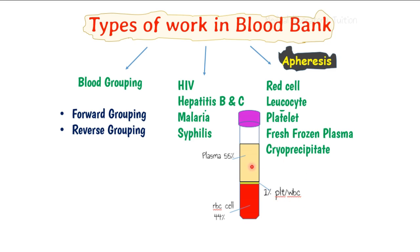We can also store blood at minus 70 degrees Celsius to produce fresh frozen plasma and cryoprecipitate, which are very important in cases of factor deficiency or related diseases. This is the end of the video — just an introduction to the blood bank.